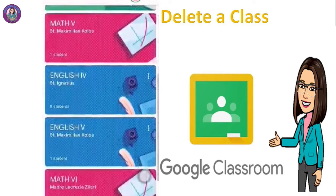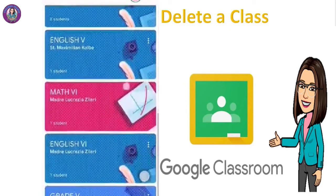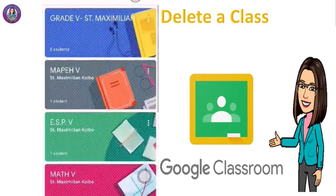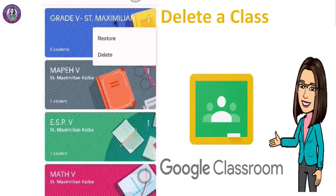In the archived classes view, you can see the three dots on the upper right. If you don't want to delete it, you can click Restore, or if you want to delete it permanently, you can do that here.